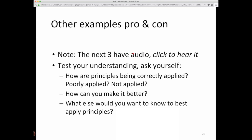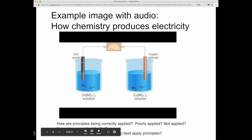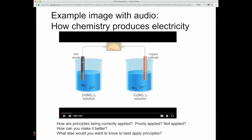There are some more examples here that you can look at. Click onto here. You should test your understanding. Ask yourself, how are principles being correctly applied, poorly applied, not applied? How can you make it better? What else would you want to know to best apply the principle? Here's one where there's this audio. A galvanic cell is a spontaneous electrochemical cell in which electricity is produced by means of a spontaneous redox reaction. In this cell, zinc metal will be oxidized and copper two-plus ions will be reduced. To complete the electric circuit, the solutions must be connected by a conducting medium through which the cations and anions can move. This requirement is satisfied by a salt bridge, which in its simplest form is an inverted U-tube containing an inert electrolyte, such as sodium nitrate or potassium chloride, whose ions will not react with other ions in solution or with the electrodes.